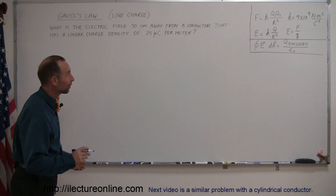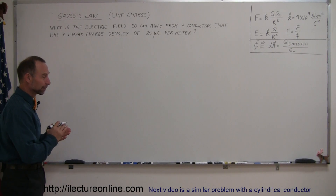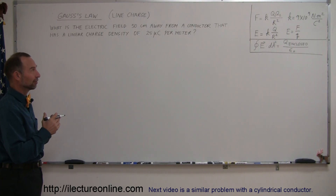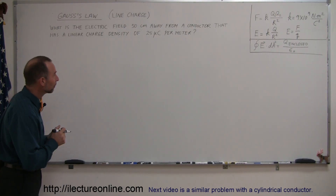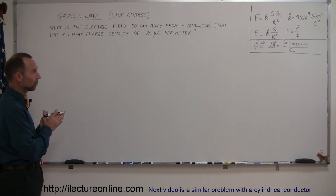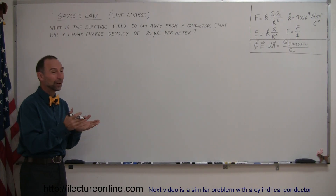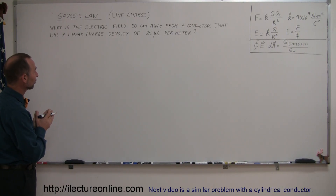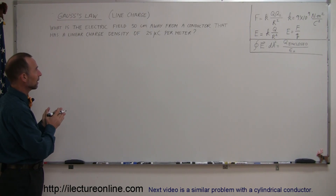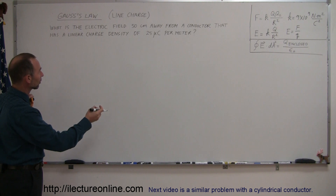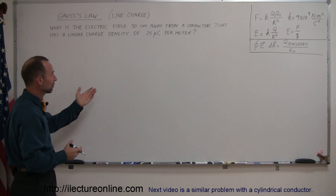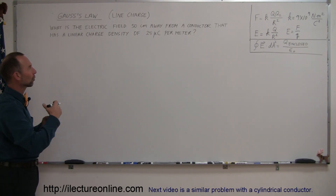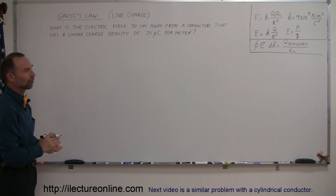Welcome to iLecture Online. Here's another example of how to find electric field, but this is a different kind of problem. Normally this would require a fair amount of advanced mathematics and integration, but because we can employ something called Gauss's Law, we can actually reduce this to a level where integration in the real sense is not really necessary. Here we're going to employ Gauss's Law to find the electric field from a linear conductor that contains charge in the amount of 25 microcoulombs per meter, and find the electric field 50 centimeters away.